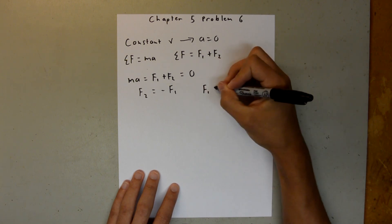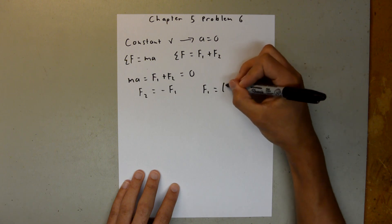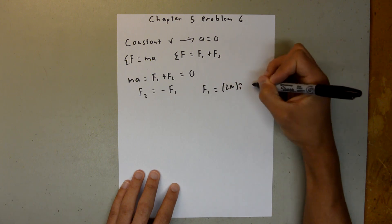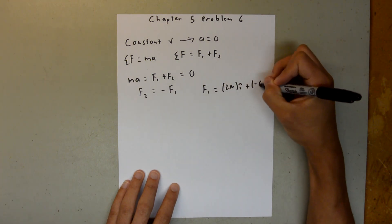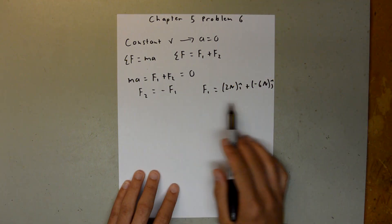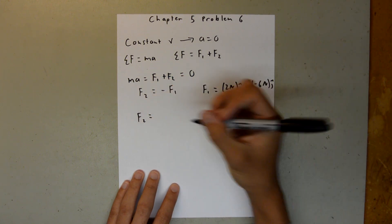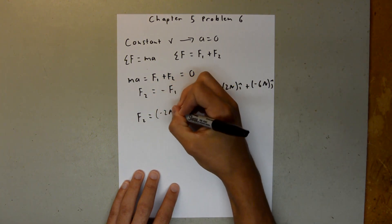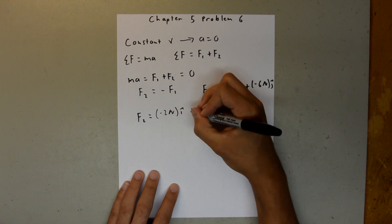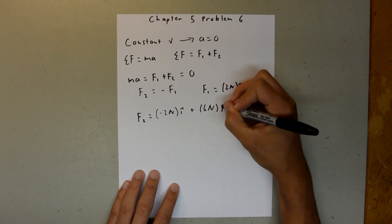And so, F1 is equal to 2 newtons i-hat plus negative 6 newtons j-hat. So, F2 is just going to be the negative of this. Then F2 is equal to negative 2 newtons i-hat plus 6 newtons j-hat.